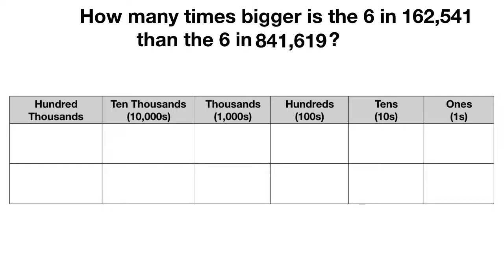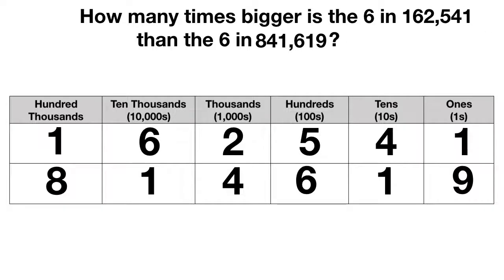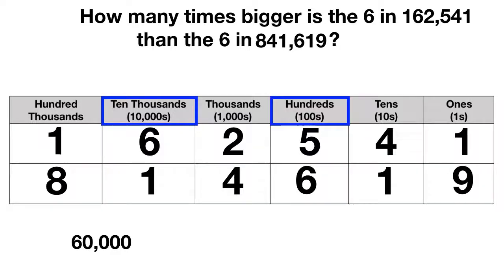On a place value chart, we can put our first number on top and our second number on the bottom. In our first number, the 6 is in the 10,000s place — it has a value of 60,000. In the second number, our 6 is in the 100s place, so its value is 600.